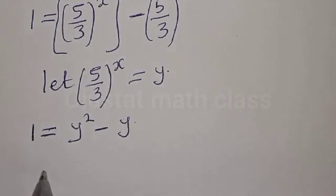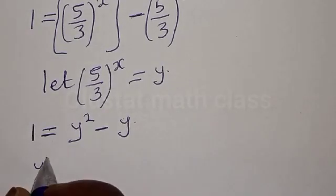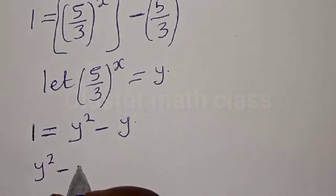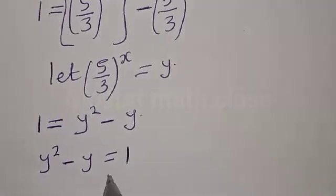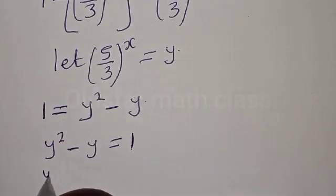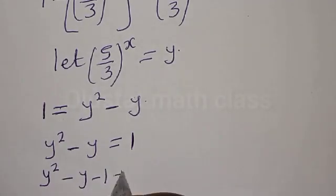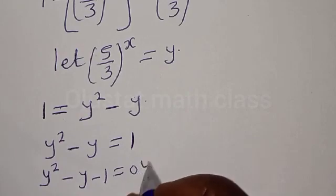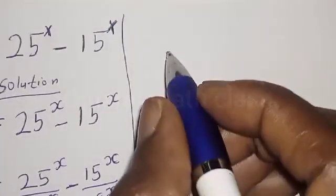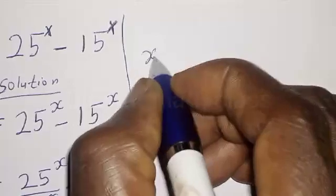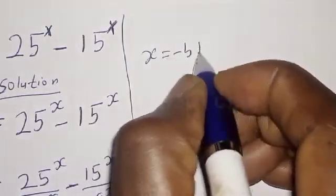Then we have 1 is equal to y squared minus y. This can be rearranged as y squared minus y is equal to 1, then we have y squared minus y minus 1 is equal to 0. This is a quadratic equation which can be solved by using the quadratic formula.